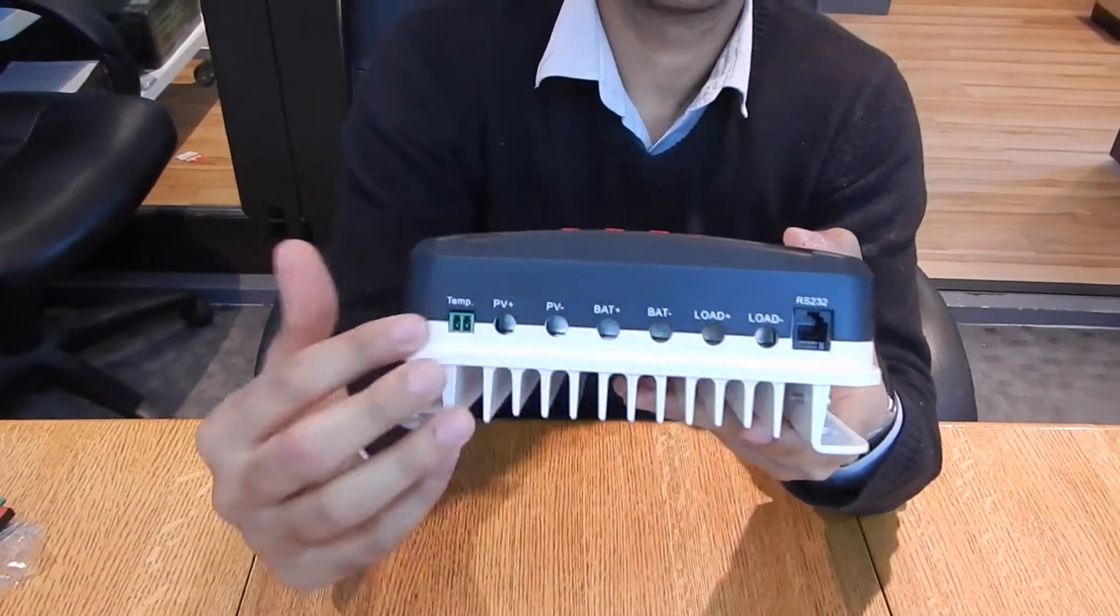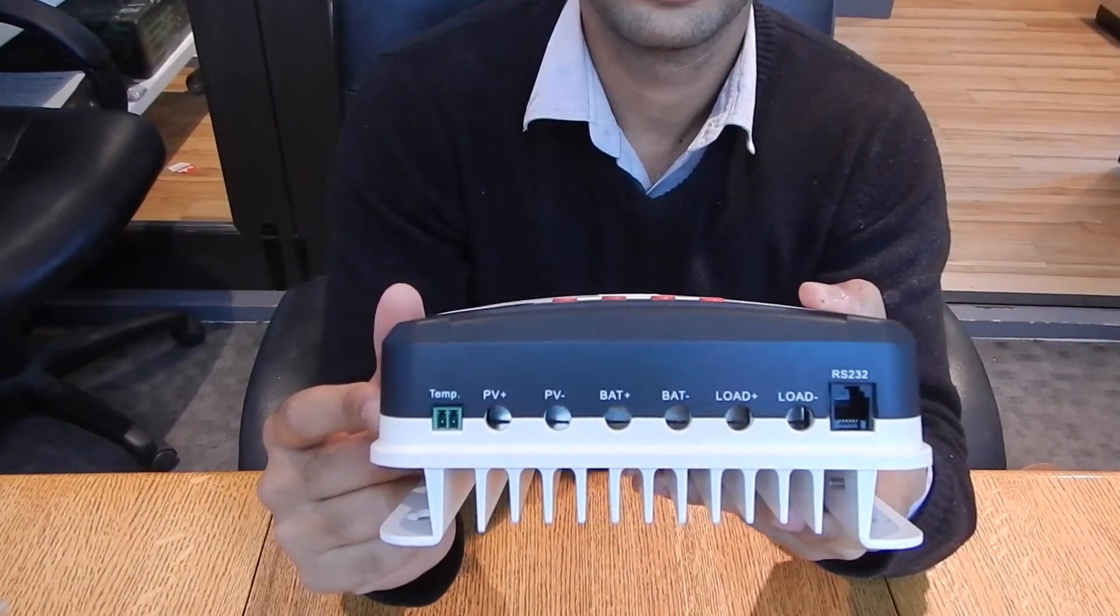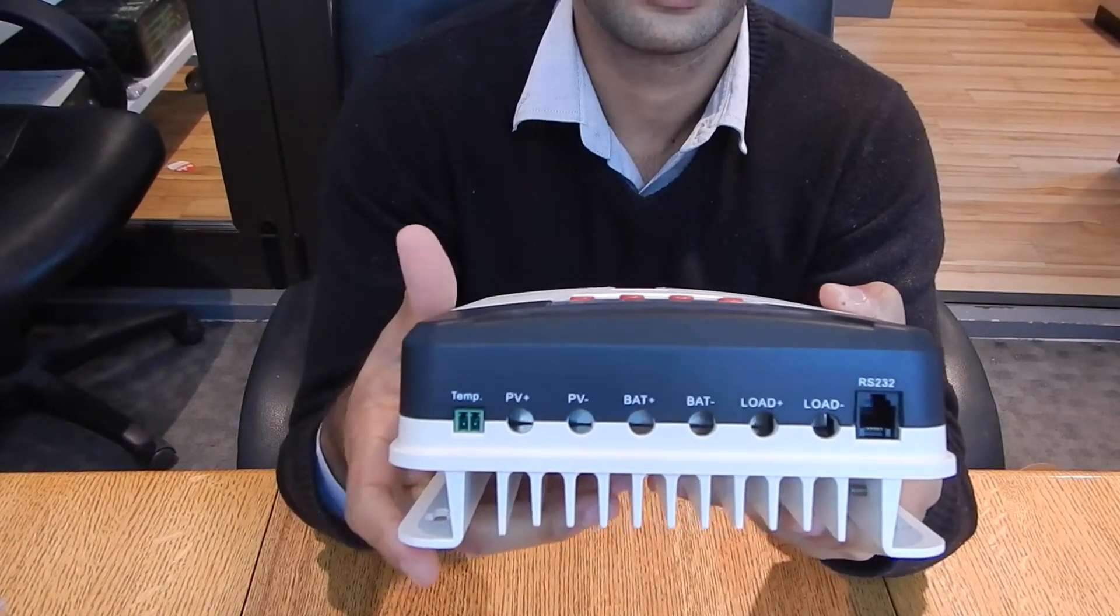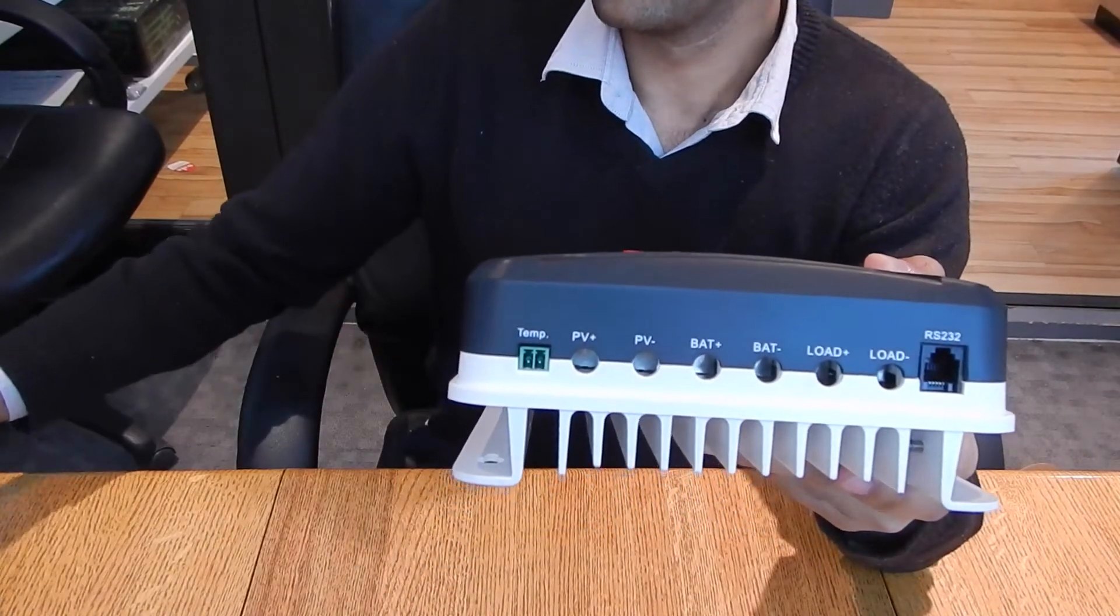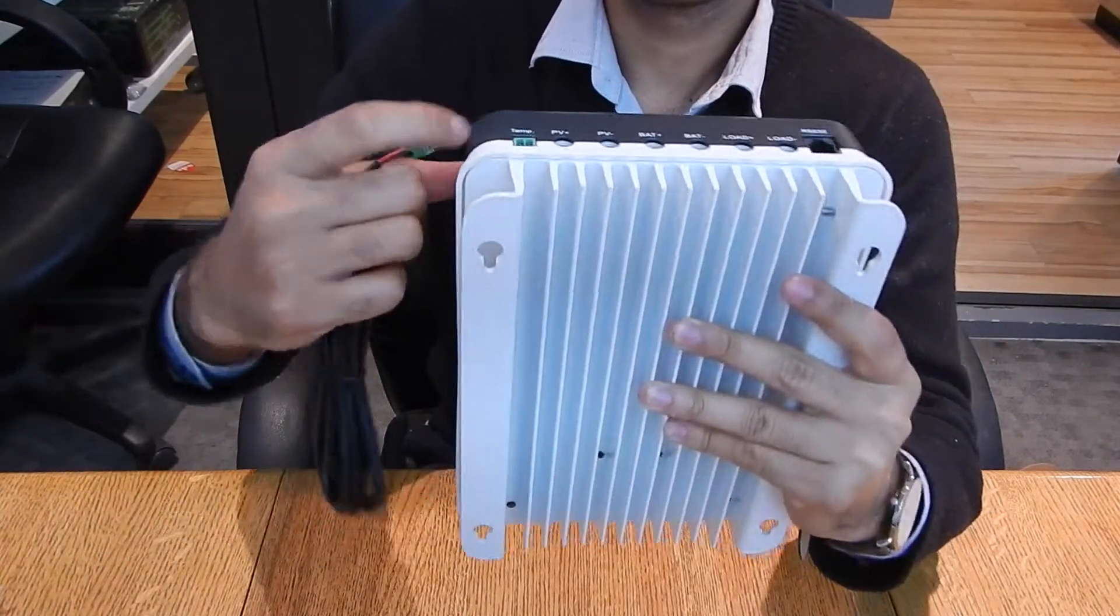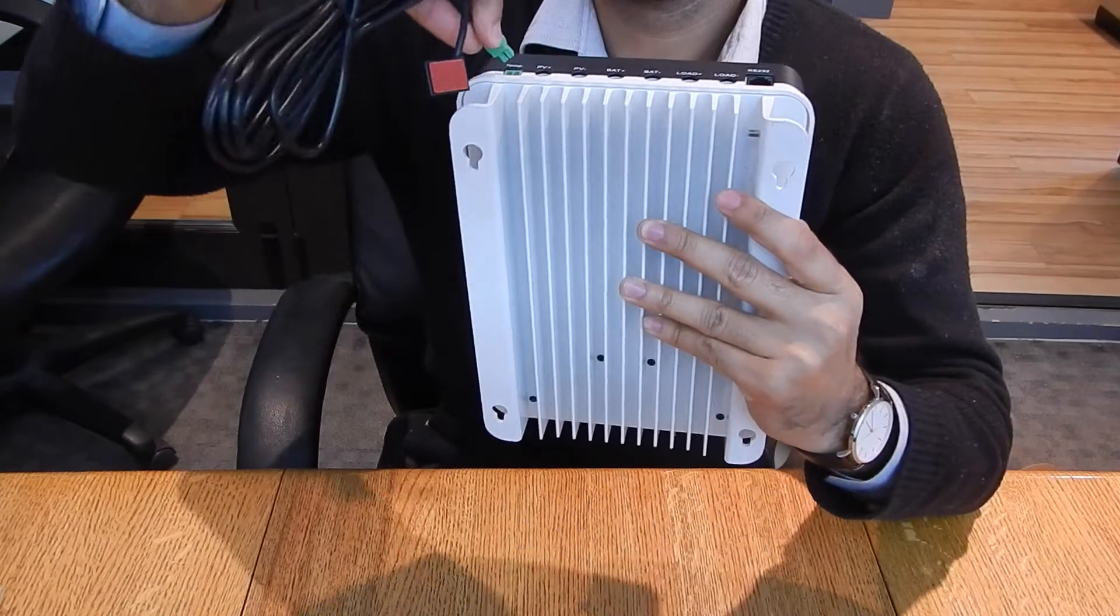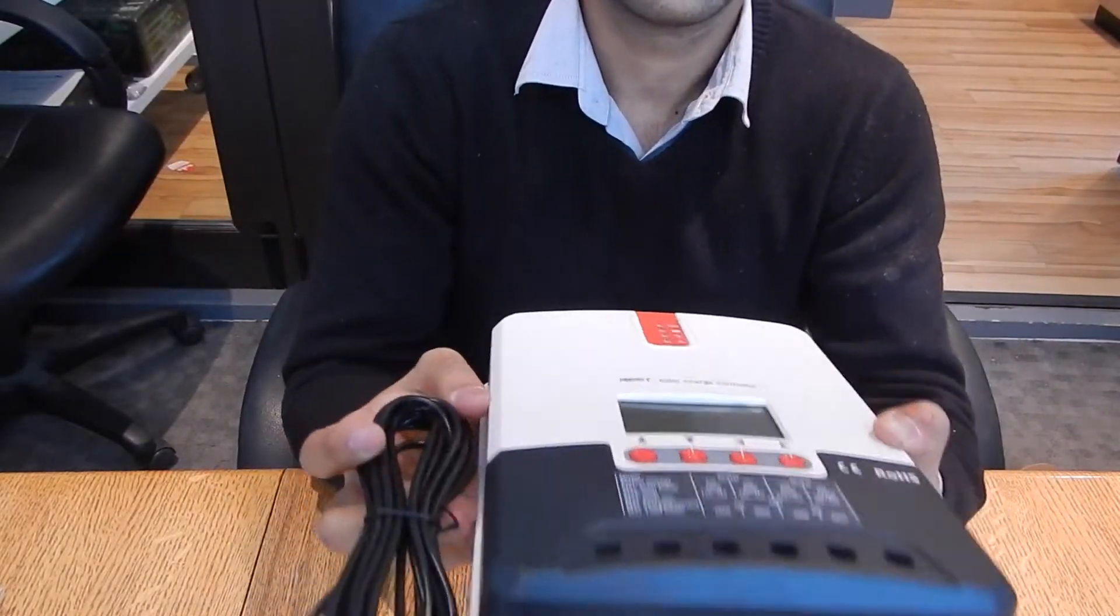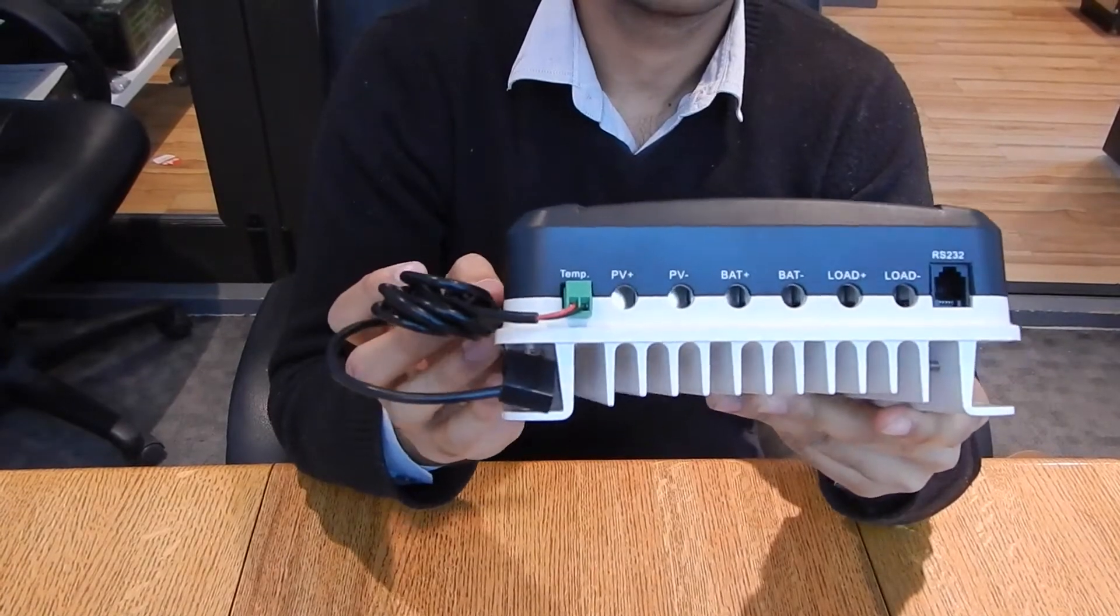Down below, you have all the ports: array positive and negative, battery negative and positive, load connectors, and a temperature port where you plug in your temperature sensor. That's how it goes in there, like that. Pretty simple.